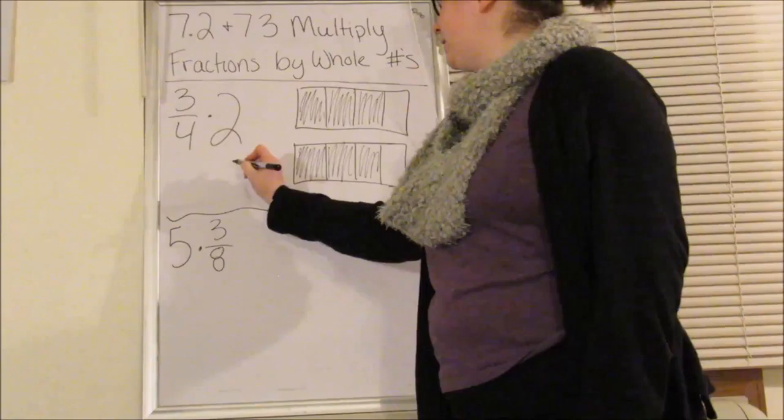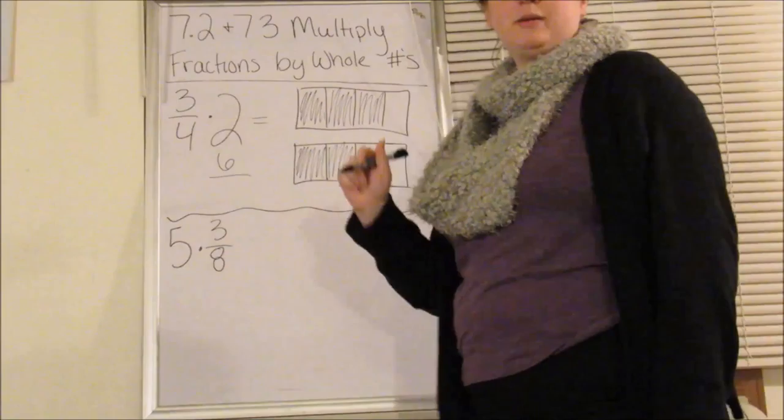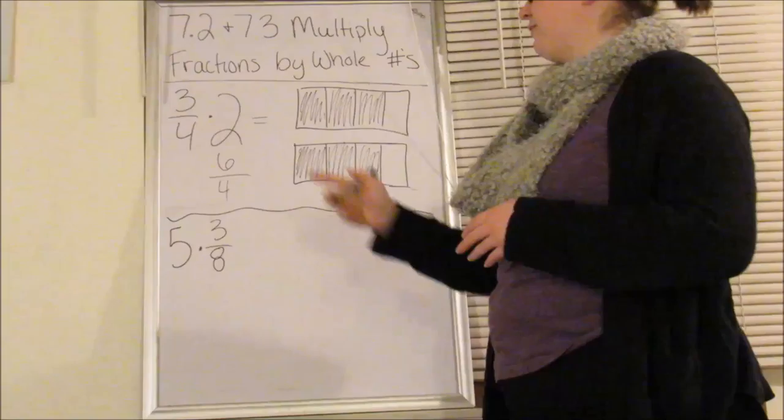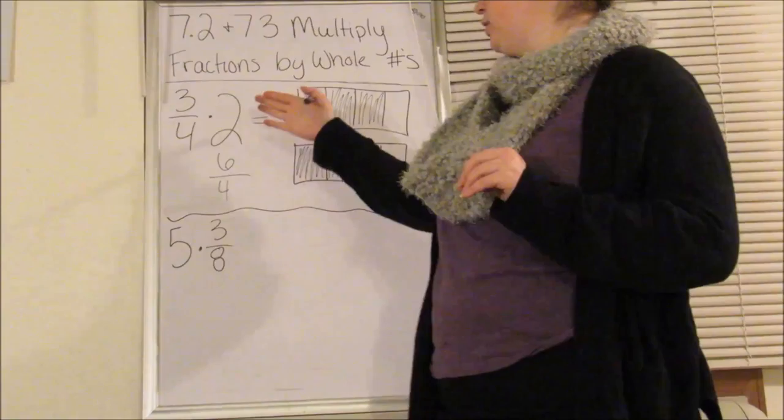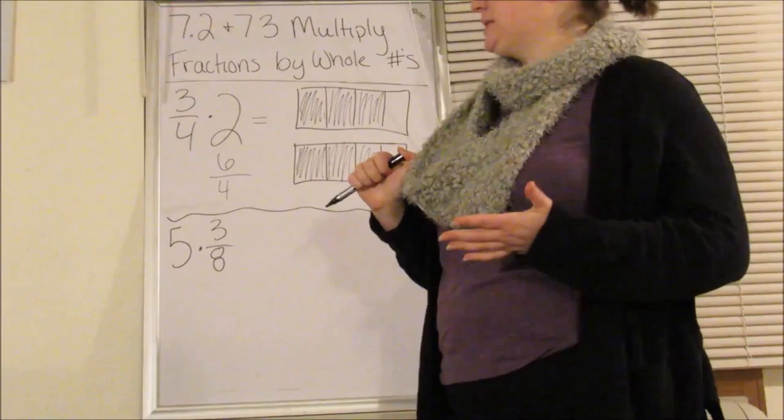Now all this model tells me is count how many shaded pieces are there. One, two, three, four, five, six. So my numerator is six. My denominator is still going to be four because it's still out of a whole being four. So we have six-fourths.